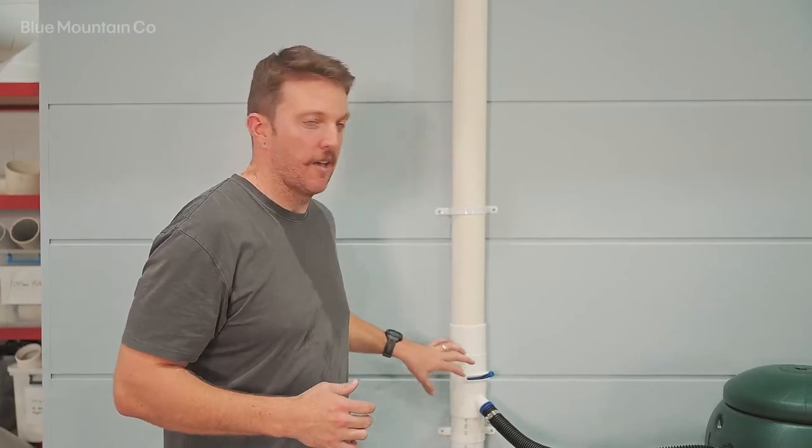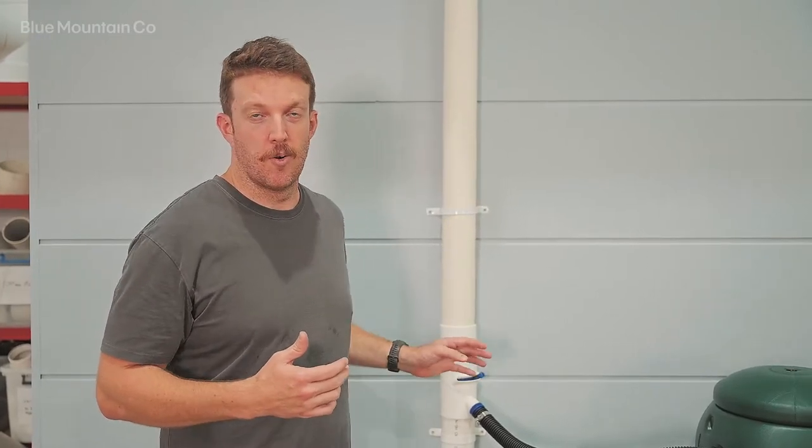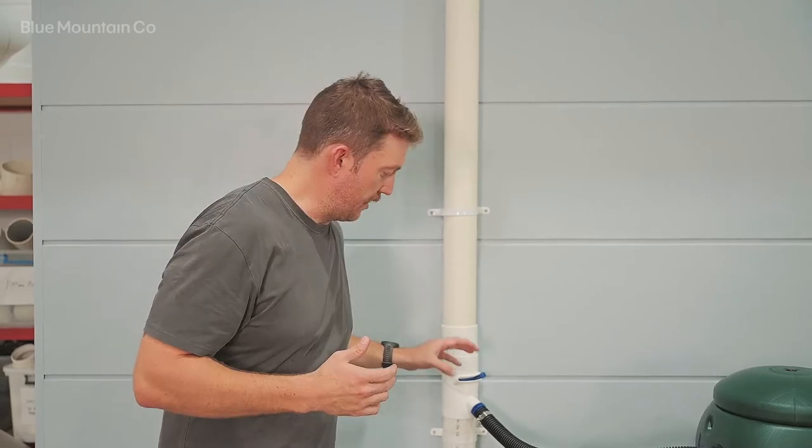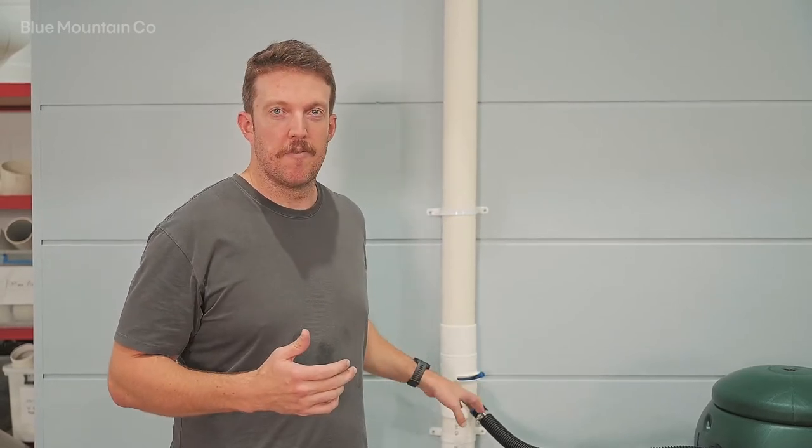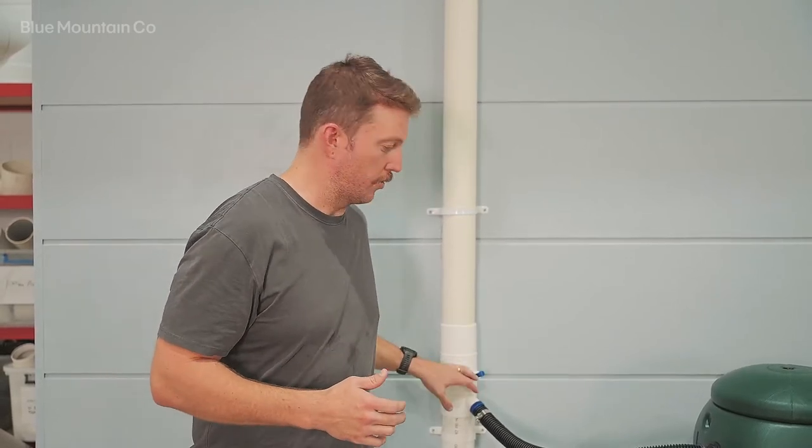If you have one of our downpipe diverters or an inline diverter, these come with a barbed fitting that will allow you to connect your diverter to a rain barrel or any other barrel or collection device.